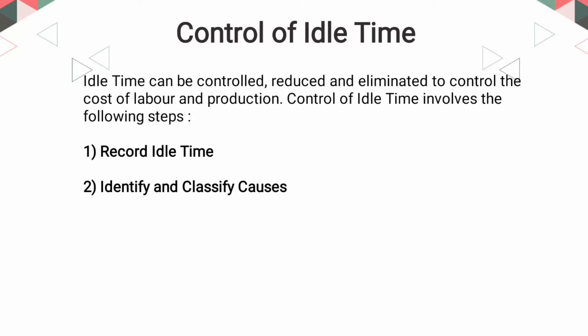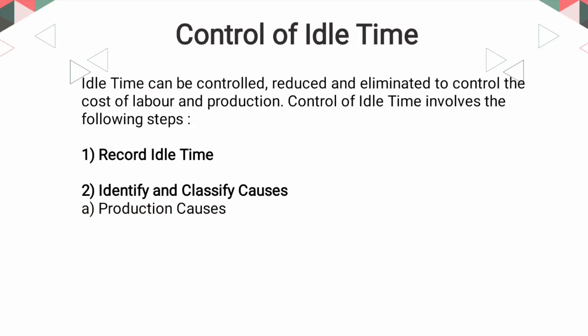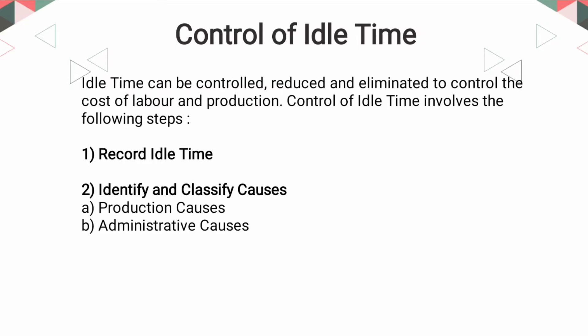Second, identify and classify causes. The causes giving rise to idle time should be identified and classified into the following categories: (a) Production causes — machine breakdown, power failure, waiting for work, tools, materials, or instructions; (b) Administrative causes — poor planning, bad labor relations leading to strikes, lockouts, etc.